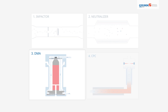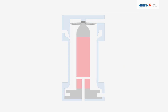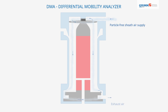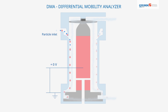The Vienna-type DMA classifies particles into size bins. Particle-free sheath air circulates between two cylindrical electrodes. This laminar sheath airflow prevents particles from reaching the center electrode when no voltage is applied.